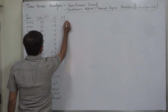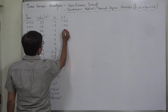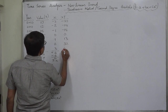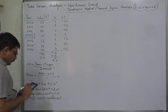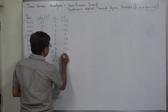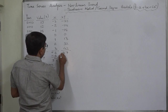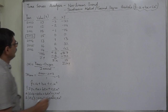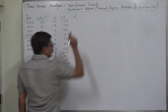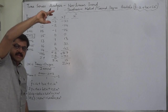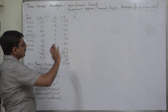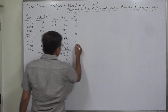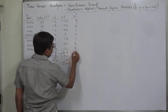Let's write the xy column. 10 times minus 3 is minus 30; 12 times minus 2 is minus 24; 18 times minus 1 is minus 18; 0 times 15 is 0; 13 times 1 is 13; 16 times 2 is 32; 14 times 3 is 42. The positive total is 87 and the negative total is 72, so sigma xy is 15. For x squared, all columns are the same as in the linear trend case: 9, 4, 1, 0, 1, 4, 9 — giving sigma x squared equals 28.